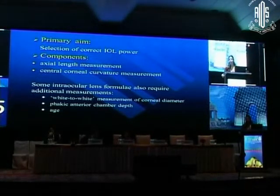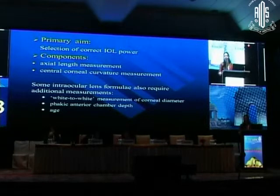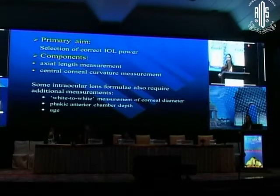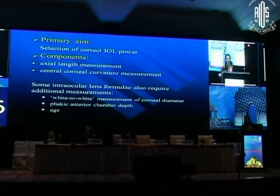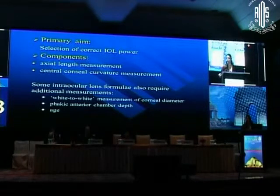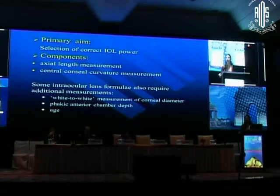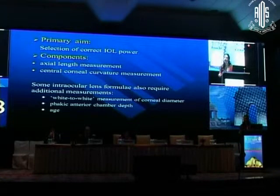There are two basic components: one is the axial length measurement and second is the measurement of the central corneal curvature. Although certain intraocular lens formulae, especially Holladay 2, require additional measurements like white-to-white measurement of the corneal diameters, anterior chamber depth measurement, and also incorporation of the age of the patient.